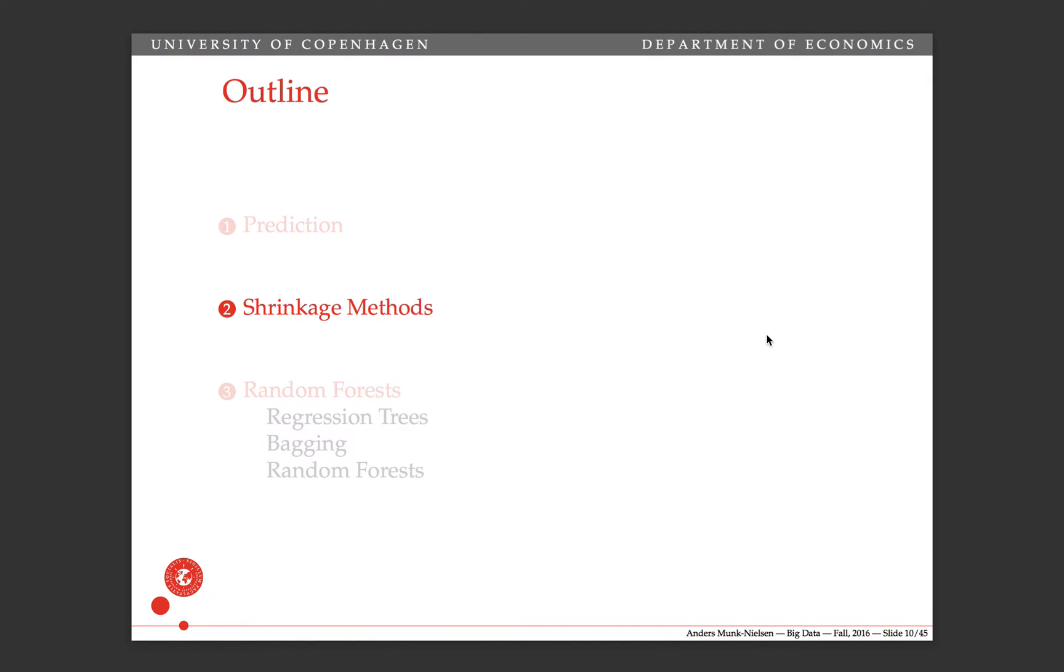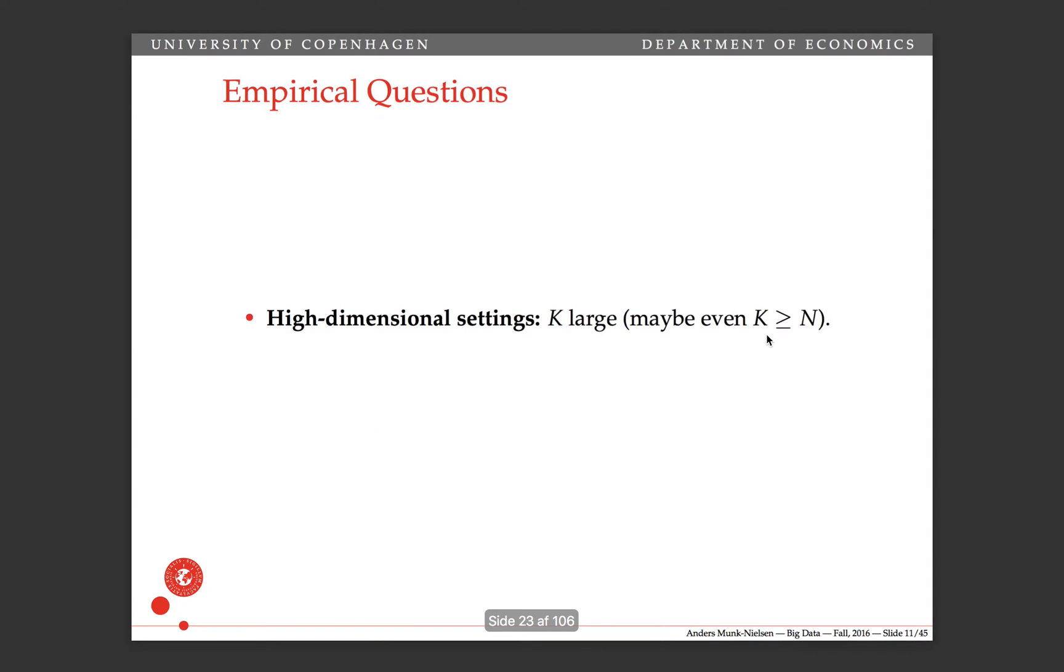In this video, I'm going to talk about shrinkage methods. Shrinkage methods are relevant in empirical contexts that are high-dimensional, which means that the number of regressors is very large and can even be larger than the total number of observations.